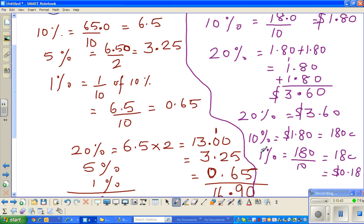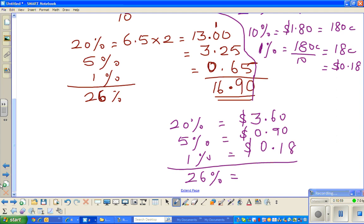So 1 percent is one-tenth of 10 percent. So that's why I divided by 10, which is $1.80, so that is $0.18. That can be written as 0.18 dollars. So finally, you've got 20 percent which is $3.60, 5 percent is 0.90 which is $0.90, and this is $0.18. So I had to simply add them up.